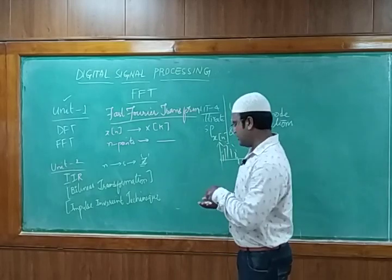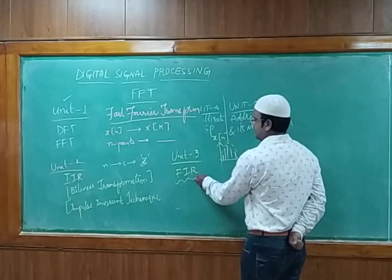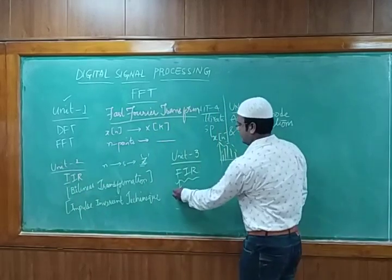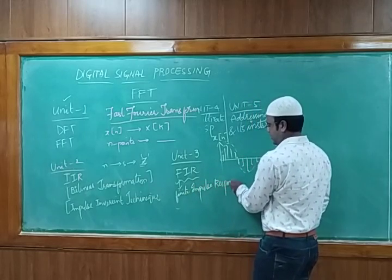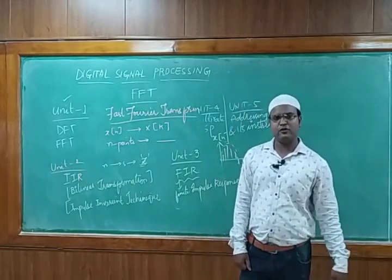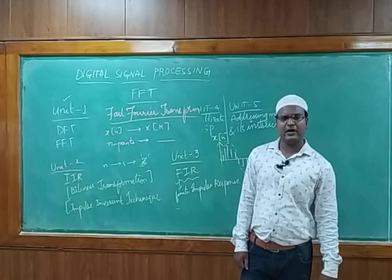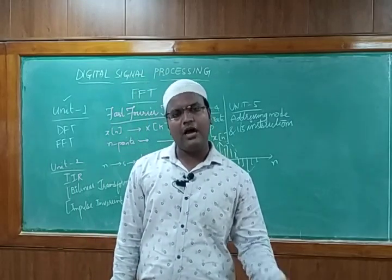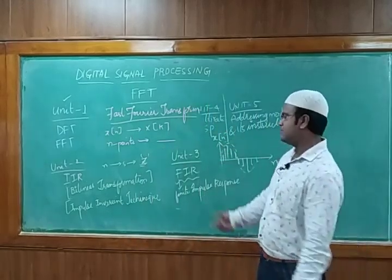In Unit 3 we are going to use FIR, which stands for Finite Impulse Response. Using finite impulse response, we convert impulses into a specific domain by applying windowing techniques. There are four types of windows in the syllabus: Rectangular Window, Triangular Window (Bartlett), Hamming Window, and Hanning Window.